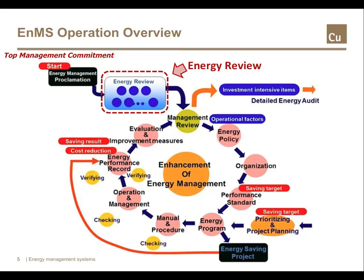In this flow chart, once top management commits to an energy management system, the energy review takes place, generating recommendations for energy performance improvements. Decisions are then made on which recommendations to put into the plan. Aspects that require no significant capital expenditure can be implemented immediately, while technical aspects that require significant investment can be taken up as energy management projects starting with either a feasibility study or a detailed energy audit.